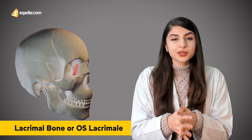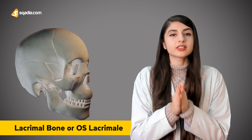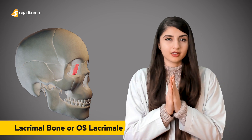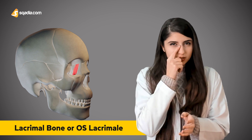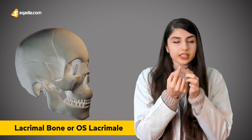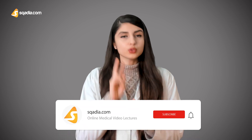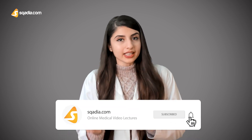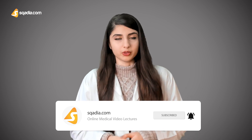Today we are going to talk about the smallest and the most fragile bone of our facial skeleton, or our viscerocranium. This is the lacrimal bone, or the os lacrimale. It is present in our eye socket. This bone is as little as our fingernail. The lacrimal bone is a paired bone, meaning that there are two bones present in our facial skeleton: the right and the left lacrimal bone.